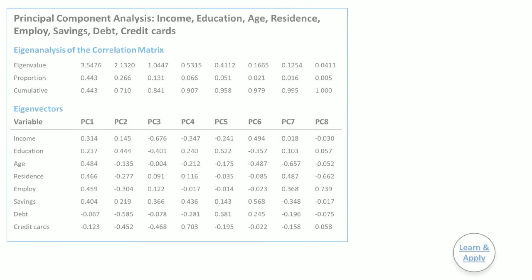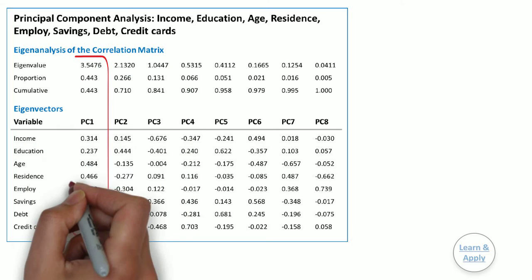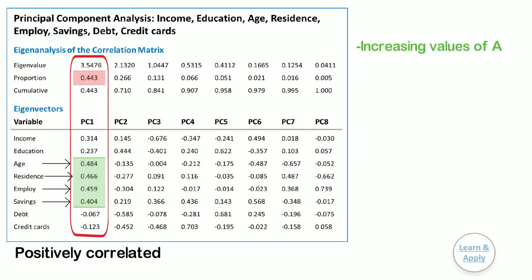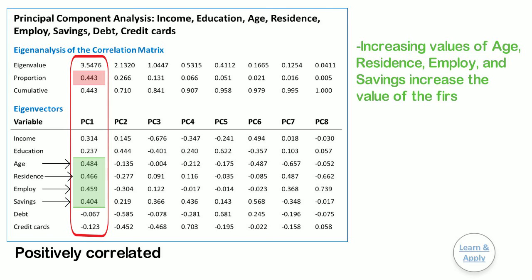The first principal component accounts for 44.3% of the total variance. The variables that correlate the most with the first principal component are age, residence, employer, and savings. The first principal component is positively correlated with all four of these variables. Therefore, increasing the value of age, residence, employer, and savings increases the value of the first principal component.